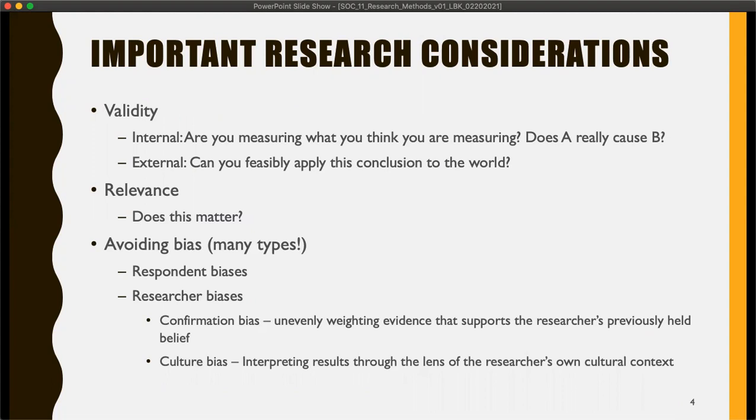There are three things that are really important for us to discuss. They are validity — internal and external. Internal validity is: are you measuring what you think you are? Does the thing you think is the cause actually cause whatever it is you're measuring? So we're talking about independent and dependent variables. External validity is: can you feasibly apply this conclusion to the real world? If you find something in the lab, do you know that it will also be found in the real world?